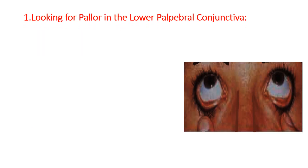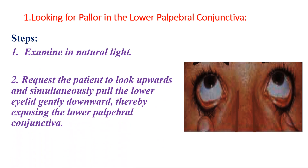First, let us look for pallor in the lower palpebral conjunctiva. To examine it, first inspect in natural light, then request the patient to look upwards and simultaneously pull the lower eyelid gently downward, thereby exposing the lower palpebral conjunctiva.